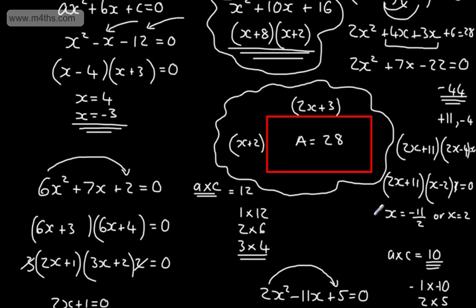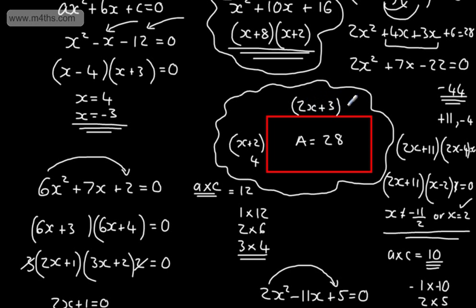So X equals negative 11 over 2, or X equals 2. Now for this particular example involving lengths, we need to check that both solutions are valid. If X is negative 11 over 2, that's minus 5.5, and 2X plus 3 would give minus 8 — we can't have a negative length. So the only valid answer is X equals 2. Checking: X plus 2 is 4, and 2X plus 3 is 7, and 7 times 4 gives us 28. Correct.